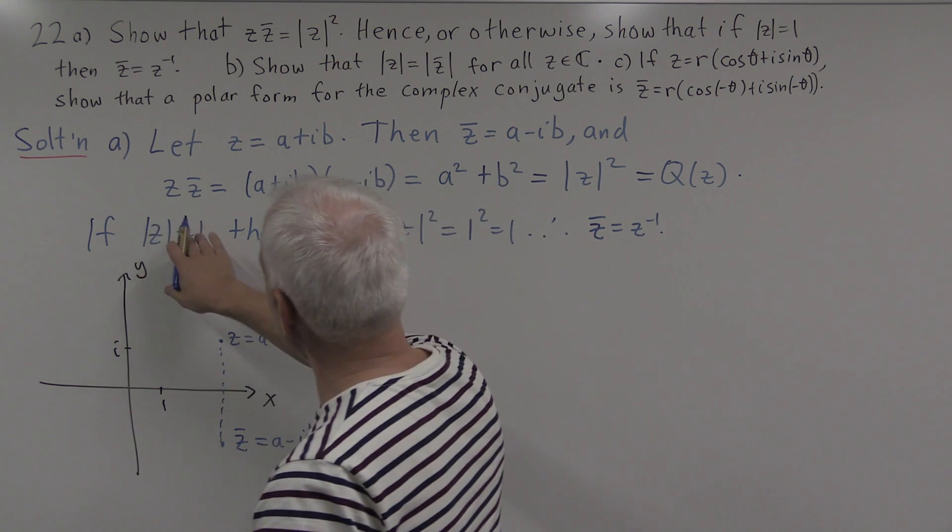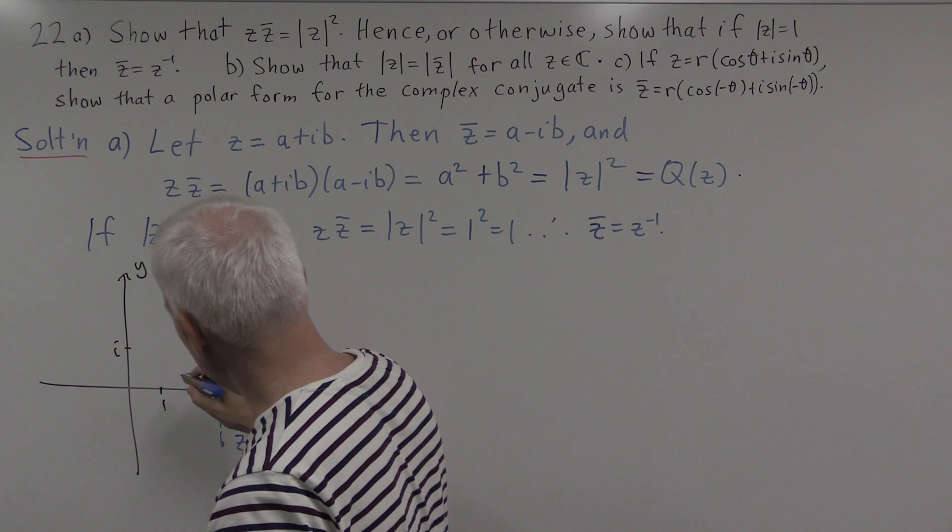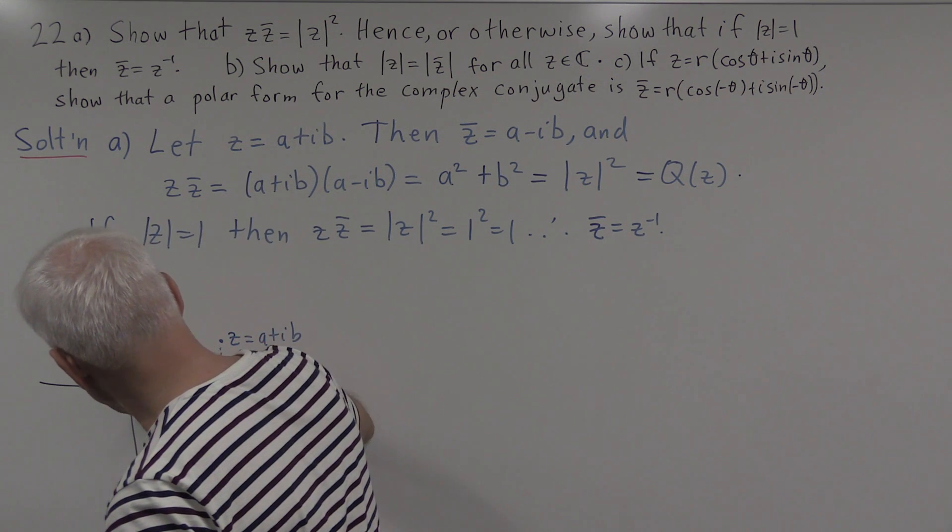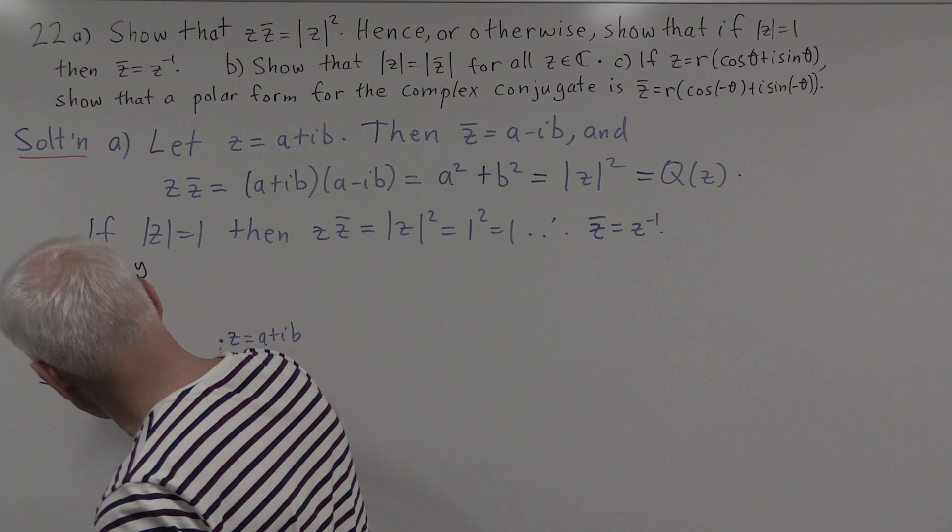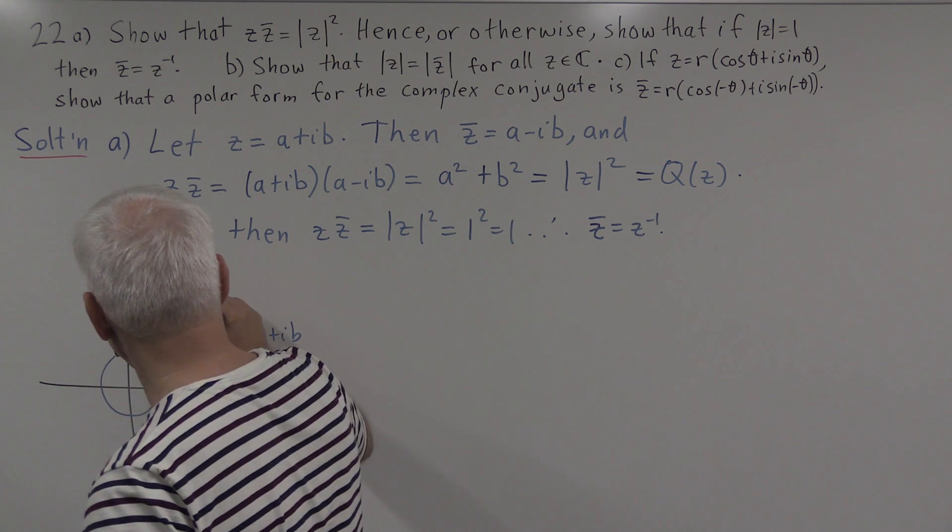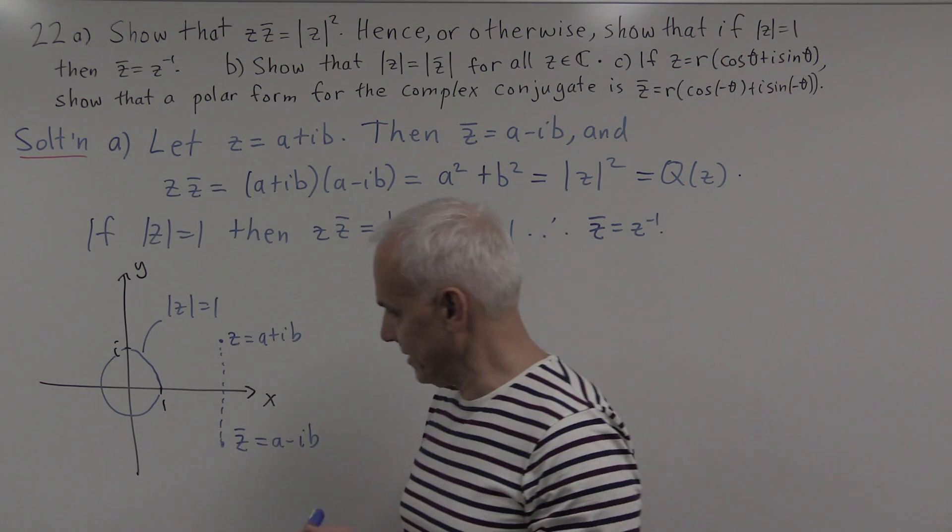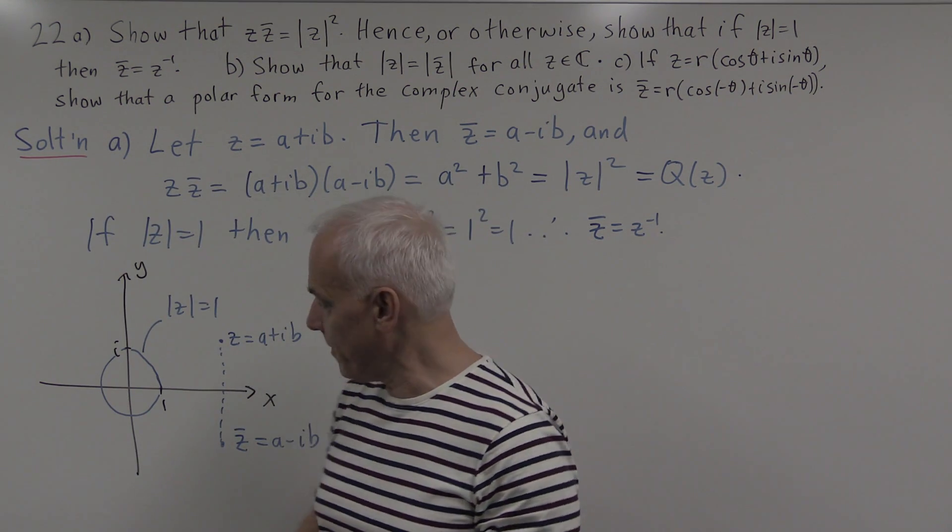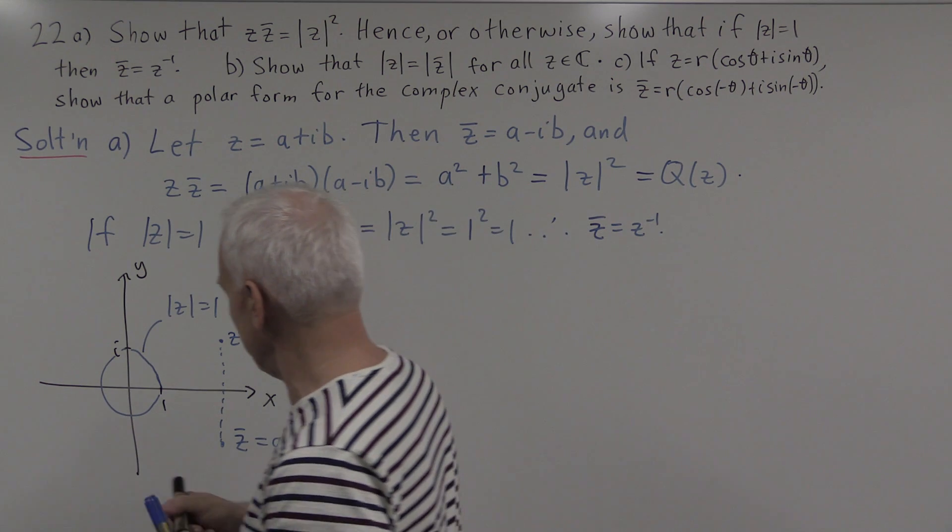And the second part here, we're saying that if we have a complex number which is lying on the unit circle, in other words it has modulus 1. So there are complex numbers with modulus 1. In that case, let's put, let's choose a z.